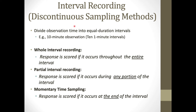With interval recording, we define our observation time — for example, 10 minutes — divide it into equal intervals, say 10 one-minute intervals, and then apply one of three recording methods. Whole interval recording: score the response only if it occurs throughout the entire interval. Partial interval recording: score the response if it occurs during any portion of the interval. Momentary time sampling: score the response only if it occurs at the end of the interval.